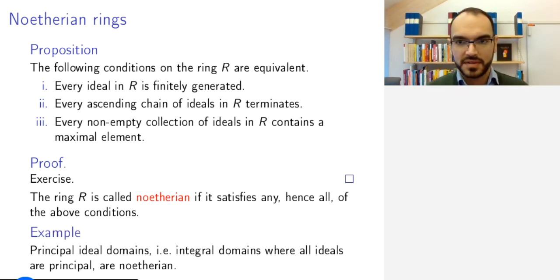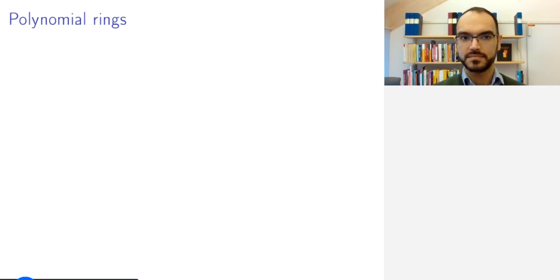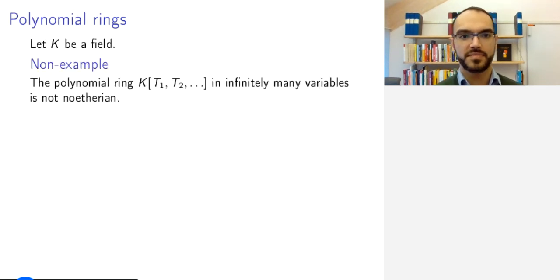The easiest example is that of principal ideal domains. A ring is called a principal ideal domain if it's a domain, so it's an integral domain, it has no zero divisors, and it's not the trivial ring, and all ideals are principal, meaning generated by one element. So of course, then all ideals are finitely generated.